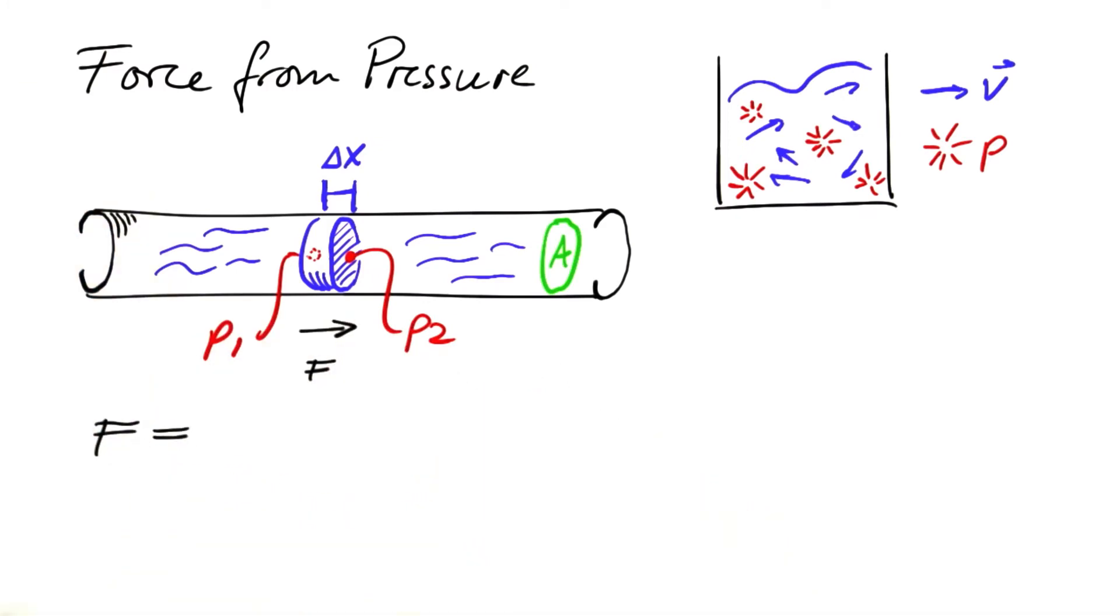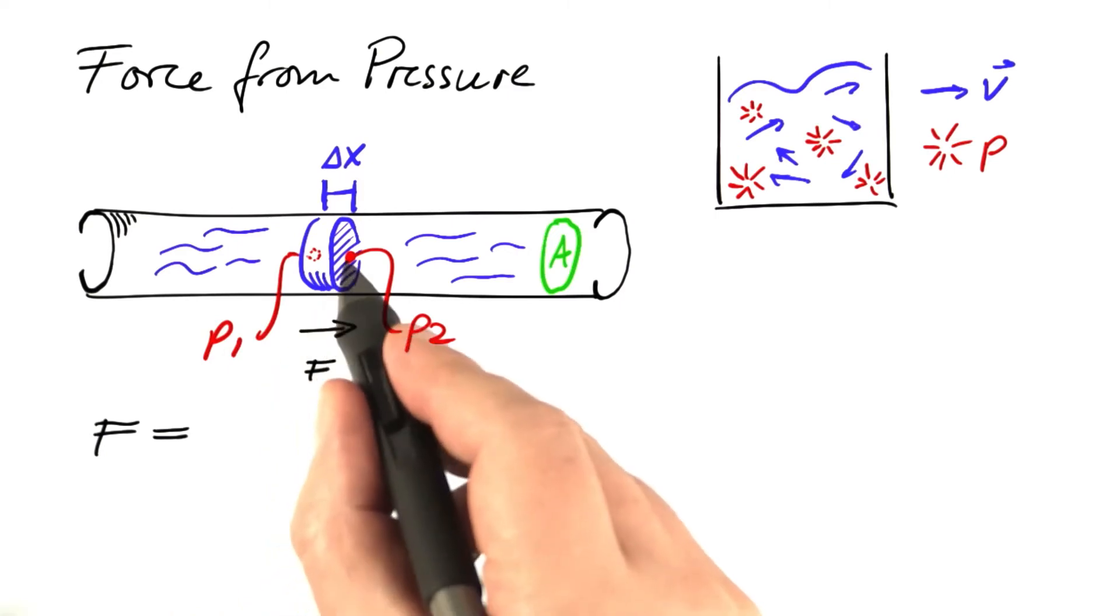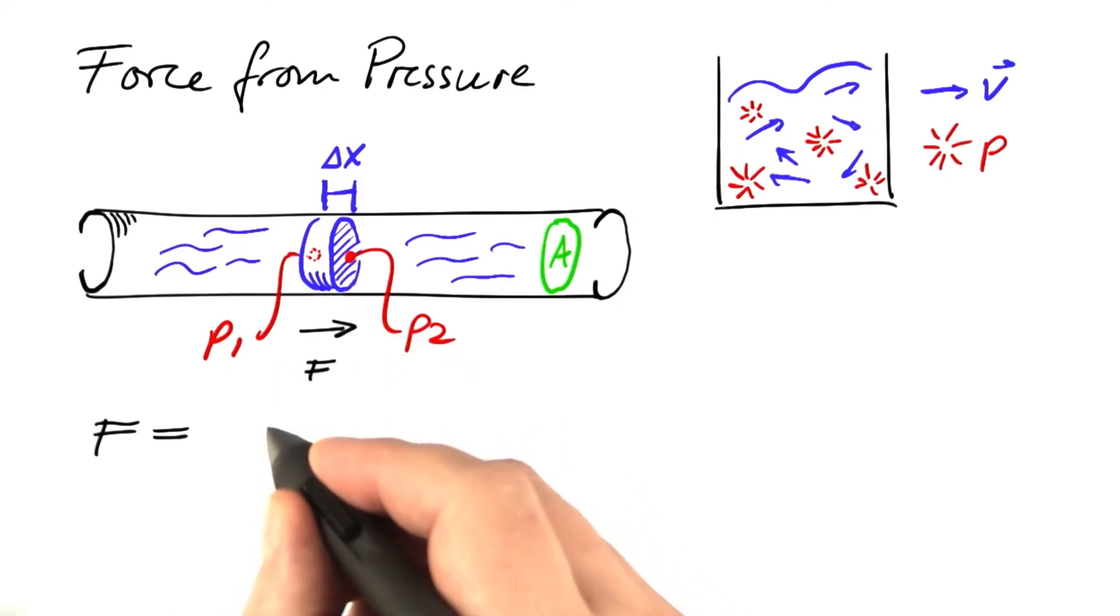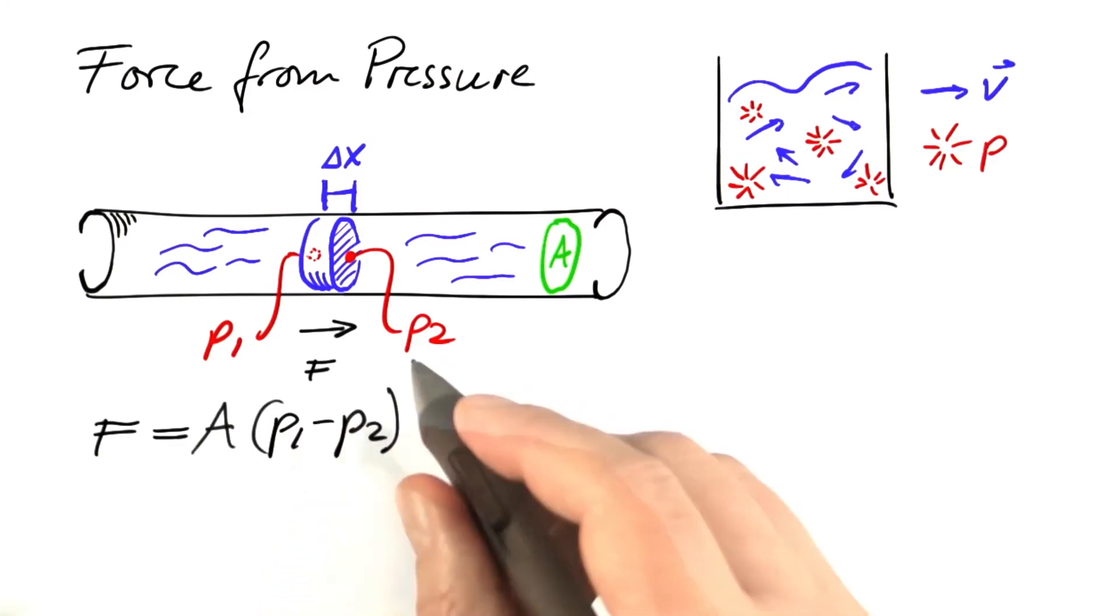Then this force is proportional to the difference of those two pressures. And if P1, the pressure on the left, is larger than P2, the pressure on the right, the force is to the right. So we have to choose signs like that. And the proportionality constant is simply the area.